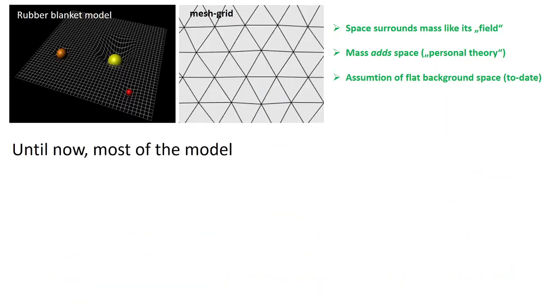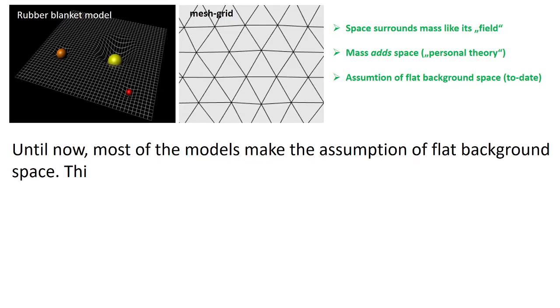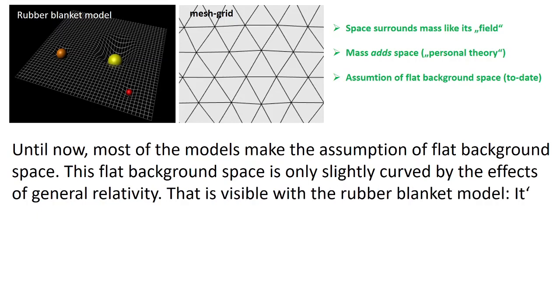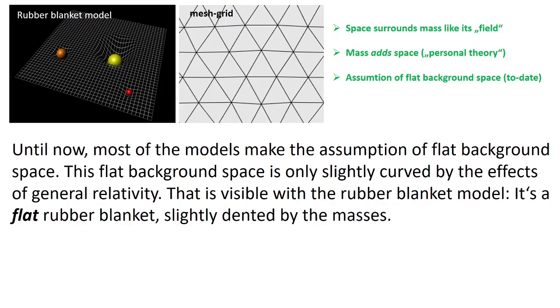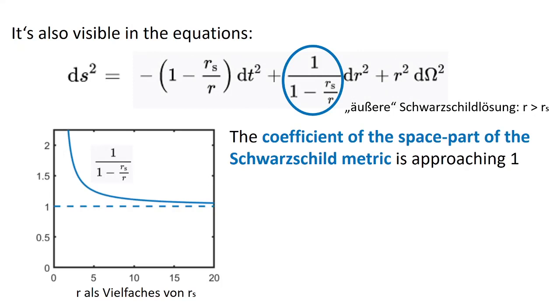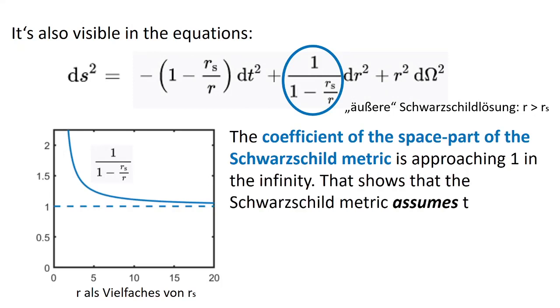Until now most of the models make the assumption of flat background space. This flat background space is only slightly curved by the effects of general relativity. That is visible with the rubber blanket model. It is a flat rubber blanket, slightly dented by the masses. It is also visible in the equations. The coefficient of the space part of the Schwarzschild metric is approaching one in the infinity. That shows that the Schwarzschild metric assumes that the background space is flat.